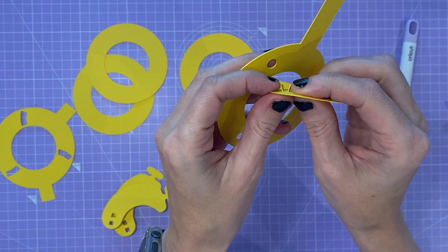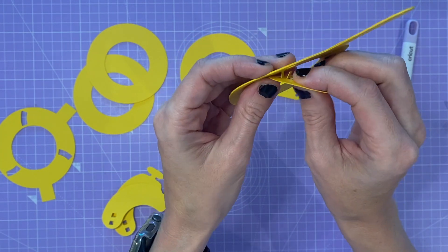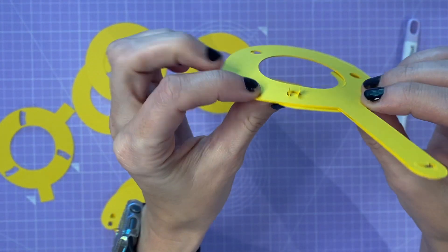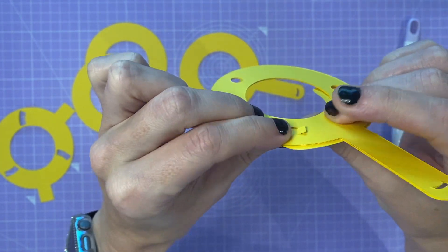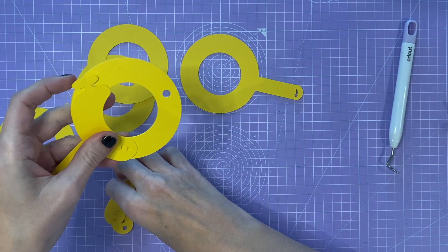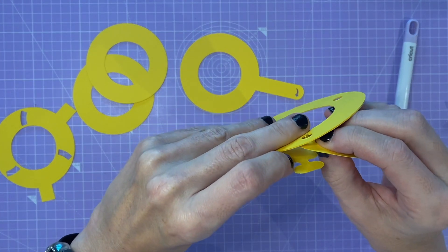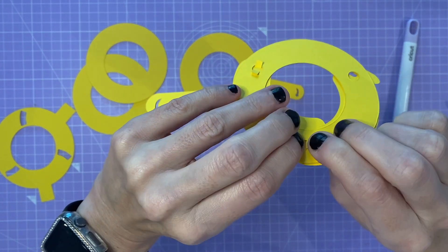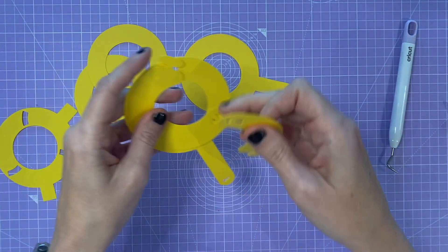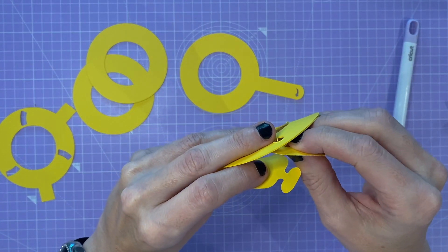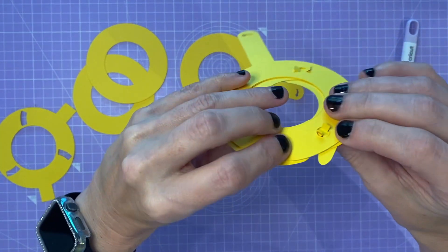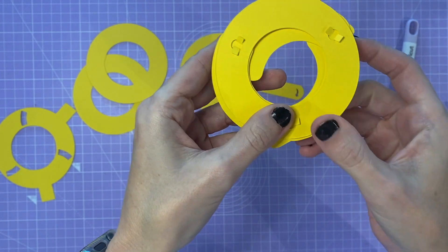So the next step is to poke these through the hole and then bend them down almost like a brad or a paper fastener. Okay, that's those all done.